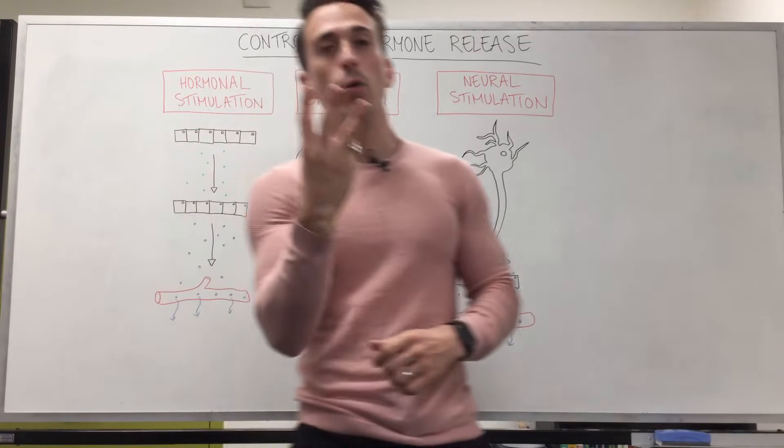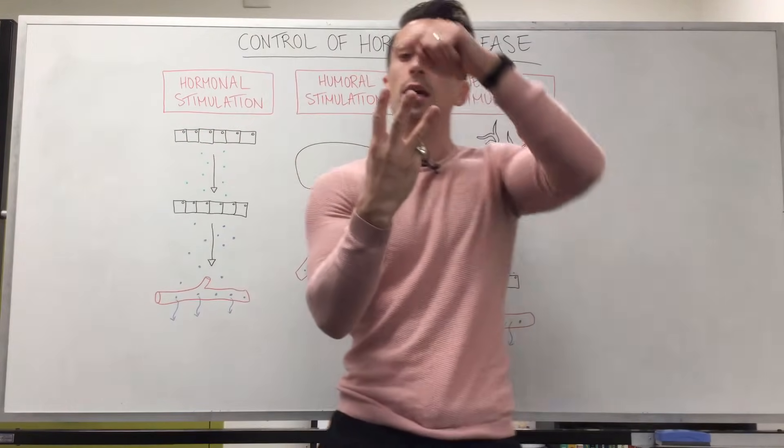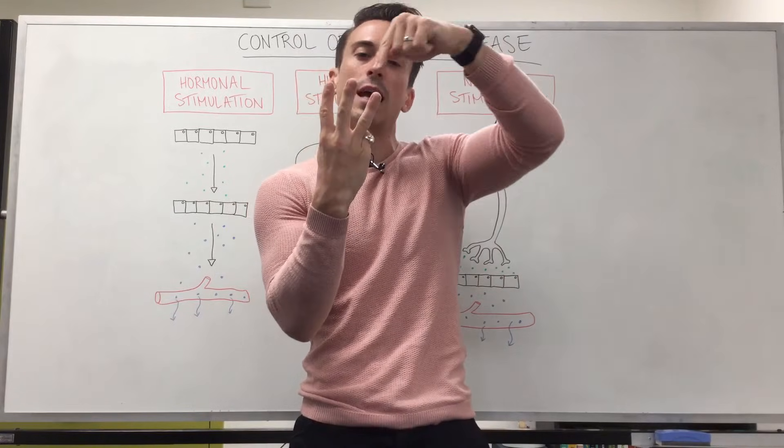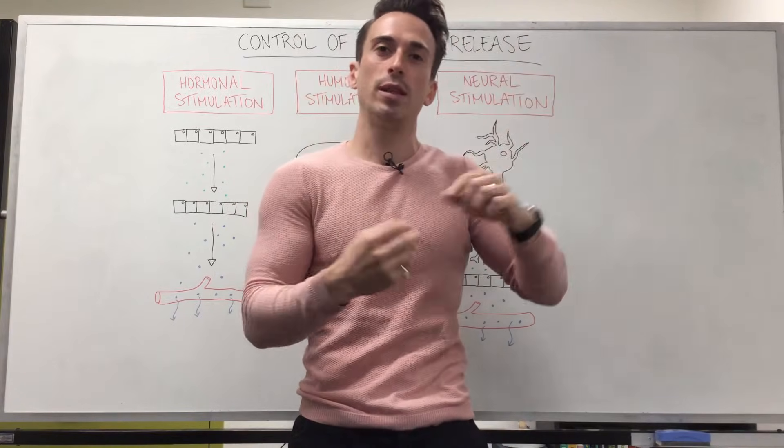So the three ways hormones can be released are: a hormonal stimulus, a humeral stimulus, and a neural stimulus.